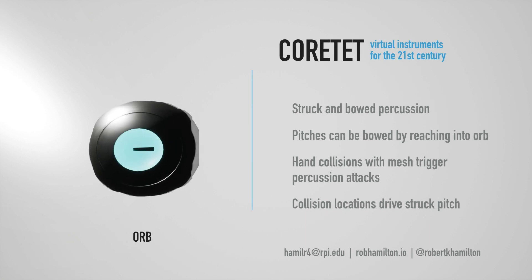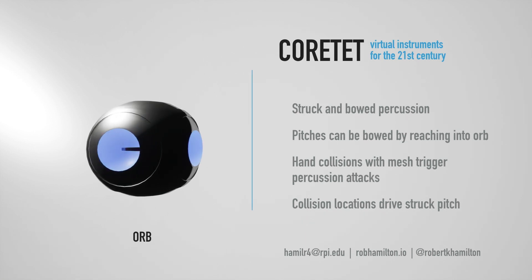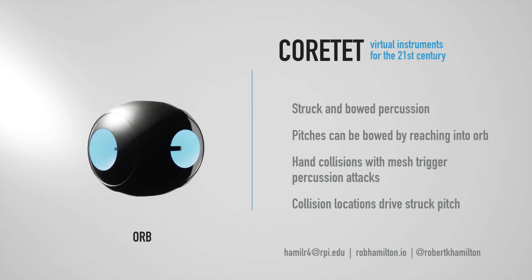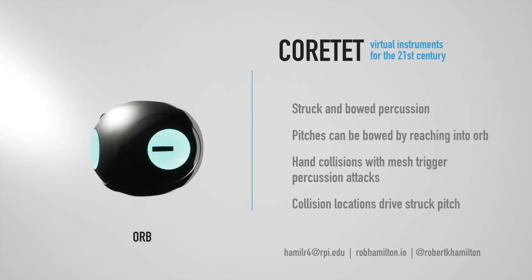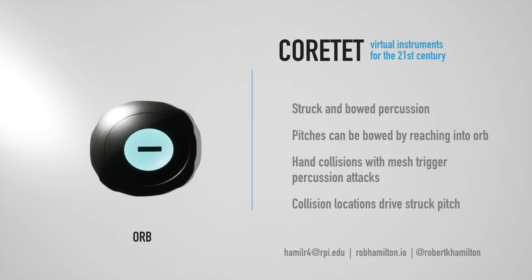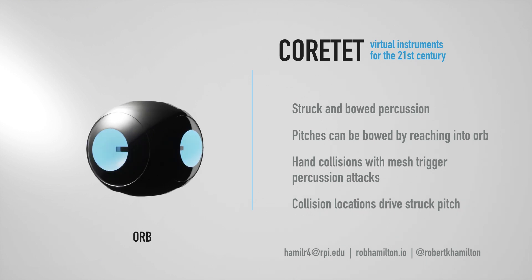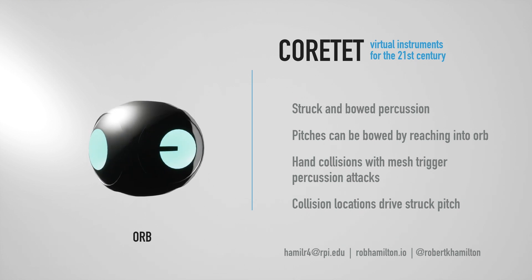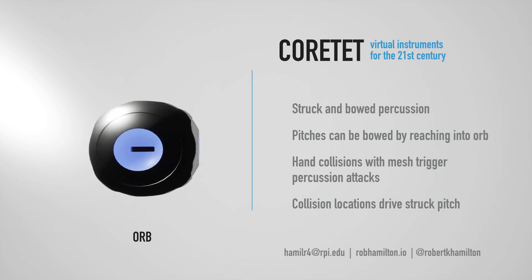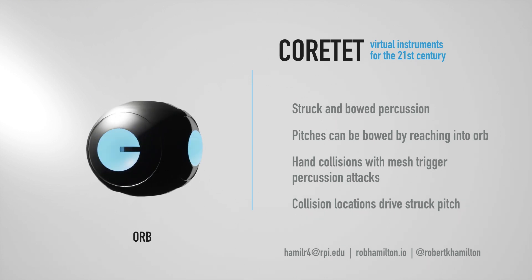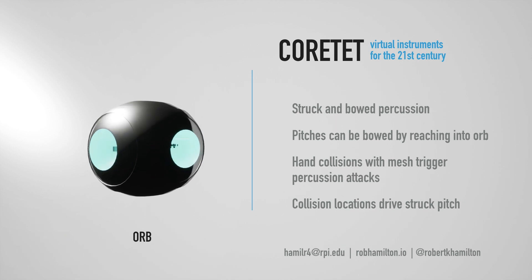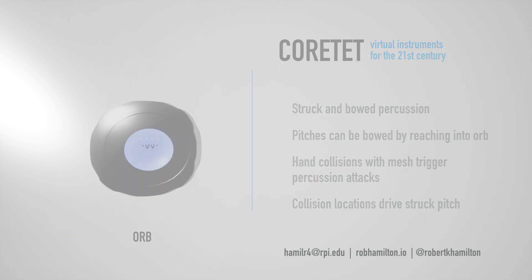One experimental Quartet configuration is the orb, a percussive instrument designed to be struck with each performer's virtual hands. The orb can also be bowed, resulting in a single pitch similar to a bowed metal plate.